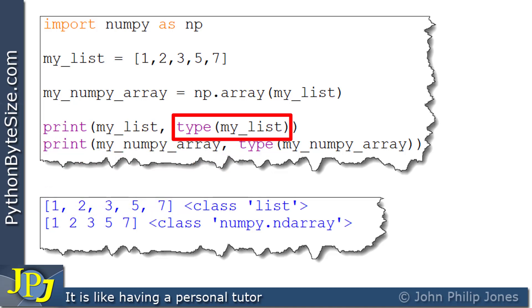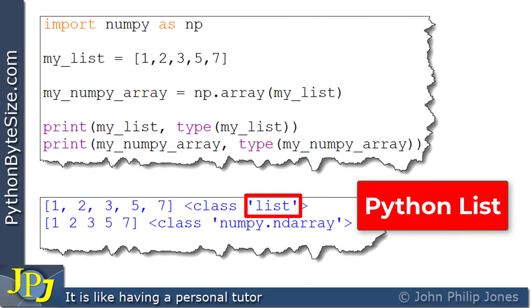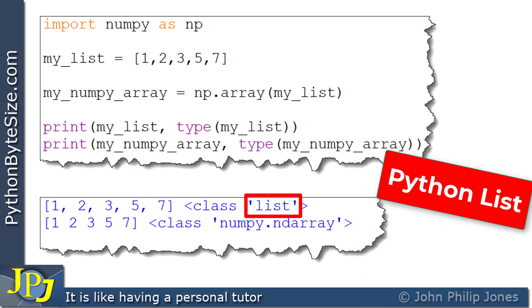we can see here that I'm printing the type of my_list, and that appears here. And it clearly shows us that the type of my_list is based on the class list. So the type of my_list is list, and it is an example of the Python list. It is part of the core language of Python.